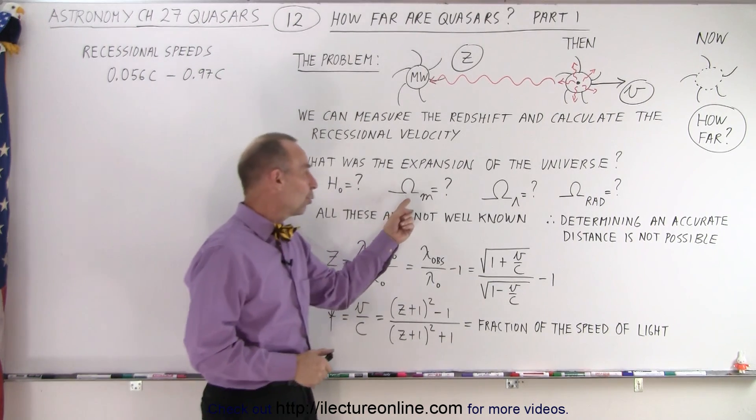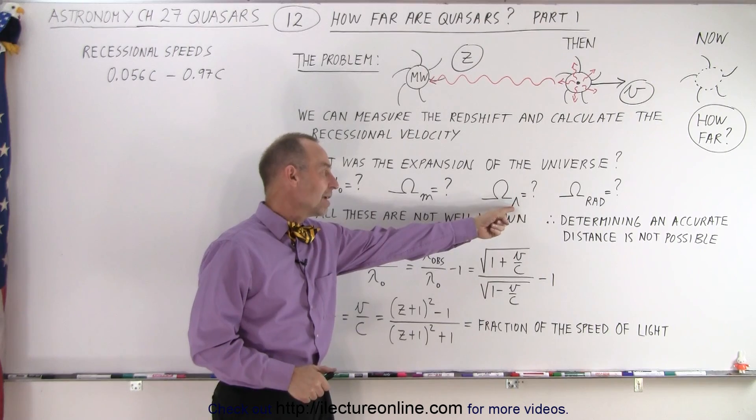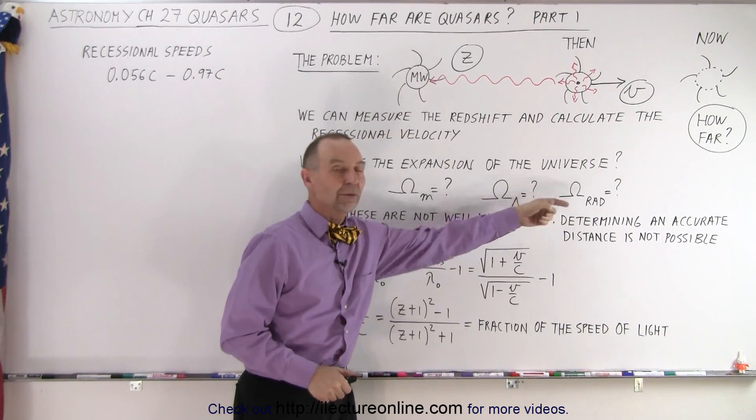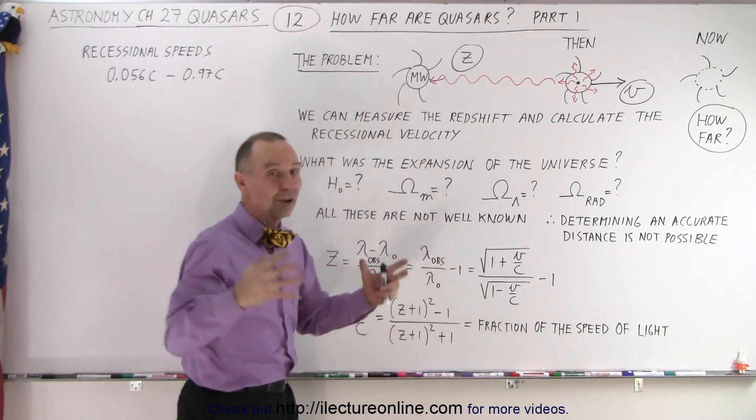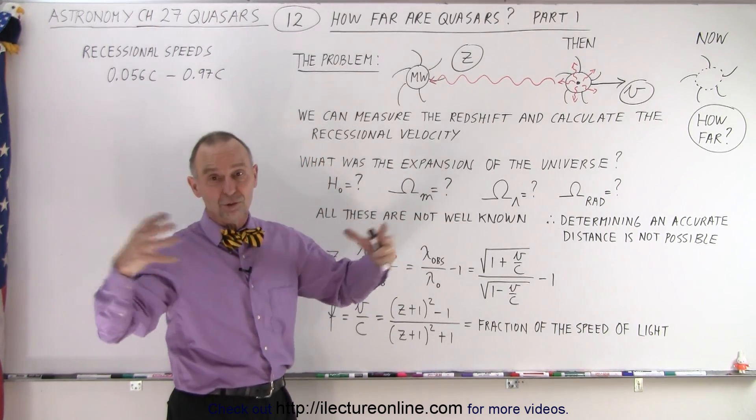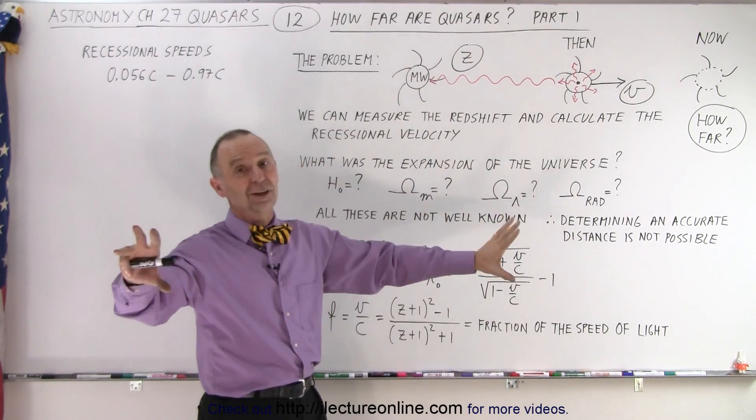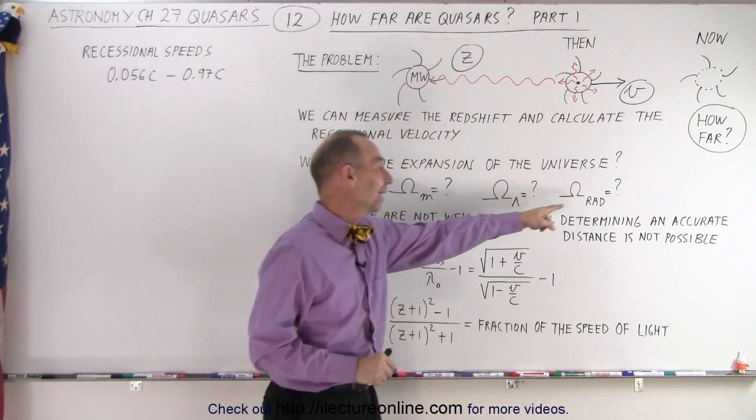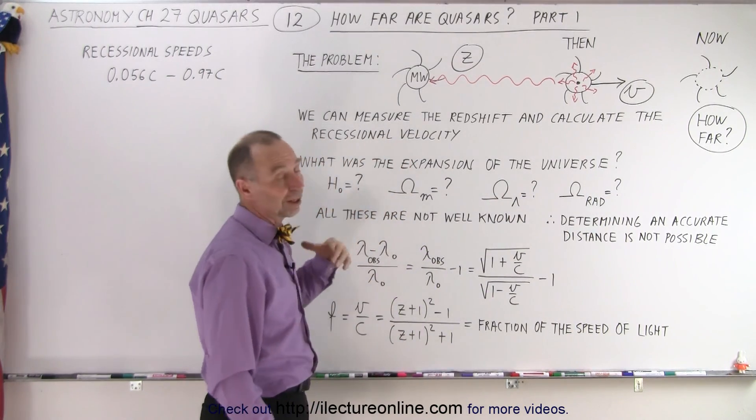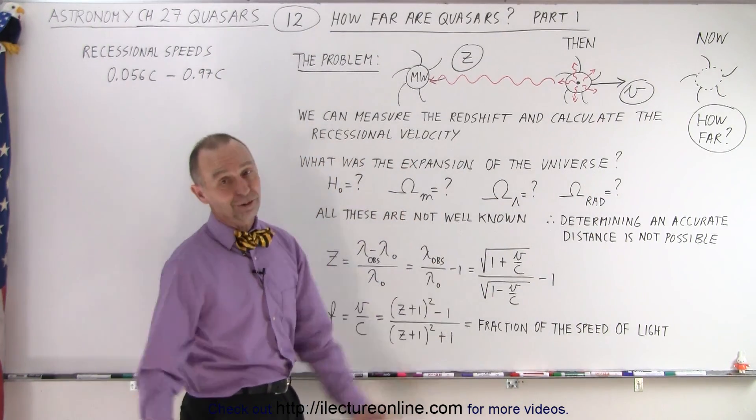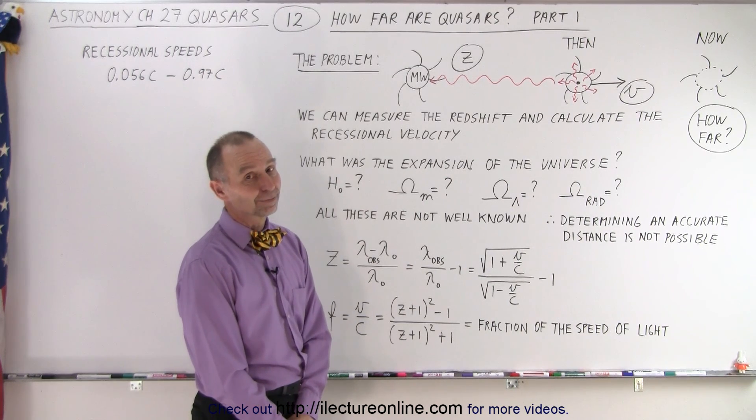So this is the energy equivalent of the mass, the energy equivalent of the dark energy, and the energy equivalent of all the radiation in the universe. Because the more mass there is in the universe, the more it will slow it down because there's more gravitational force. The more dark energy there is, the more it will push the universe apart. The more energy we have here, the more it will push the universe apart. And the Hubble constant will tell you how fast the universe is expanding.